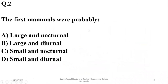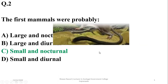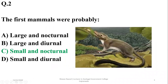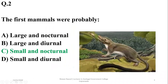The first mammals were probably smaller in size and nocturnal, because at that time there were larger reptiles. This picture shows an artistic representation of one of the earliest mammals.